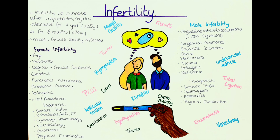Age is a primary cause of infertility — a woman below or above fertile age is infertile. Also, hormone disorders cause infertility. Those include polycystic ovarian syndrome, hyperprolactinemia, hypothyroidism, and hyperandrogenism.